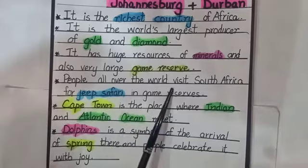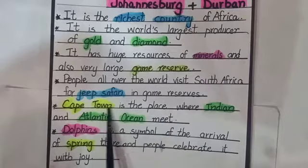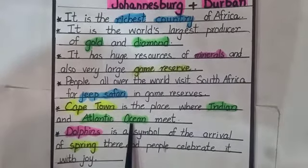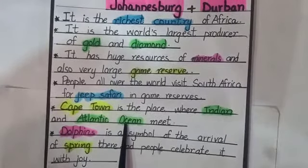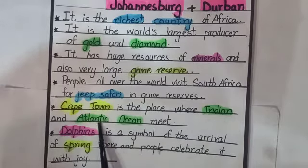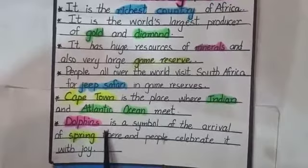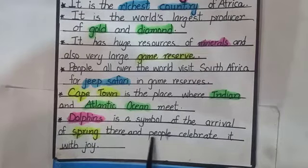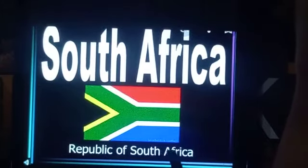People from all over the world visit South Africa for jeep safari in game reserves. Cape Town is the place where the Indian and Atlantic Oceans meet. There are total five oceans in the world. Dolphins are a symbol of the arrival of spring in South Africa, and people celebrate it.